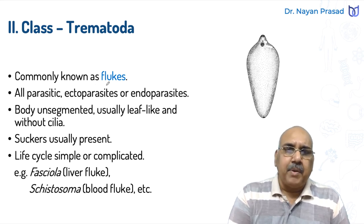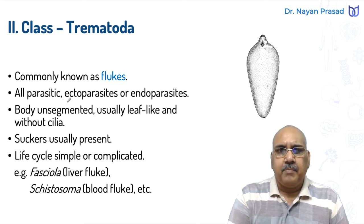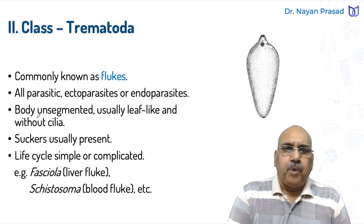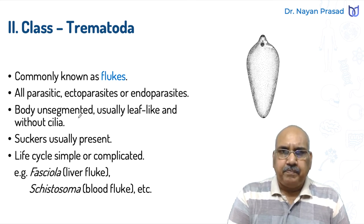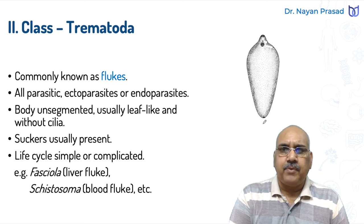Now let us talk about class Trematoda. Trematoda includes liver fluke and the members of this group are commonly called flukes. They are all parasitic - they may be ectoparasites or endoparasites. The body is unsegmented and usually leaf-like, without cilia.